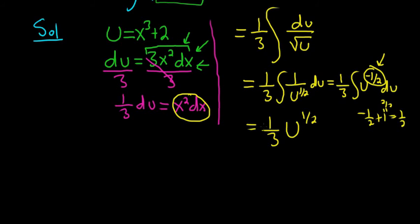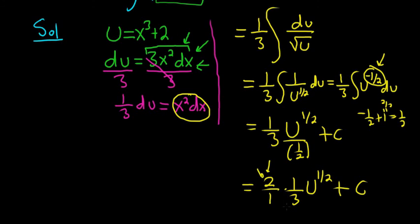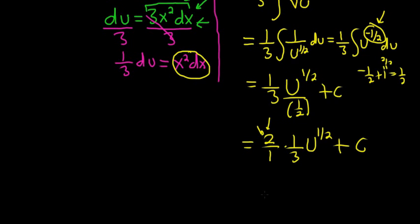Now we're dividing by 1/2. When you divide by 1/2, you multiply by the reciprocal. So it's 2/1 times 1/3 times u^(1/2). Typically I skip this step. When you divide by a fraction, you multiply by the reciprocal. This ends up being 2/3 times u^(1/2).